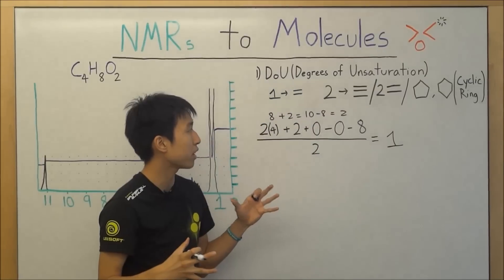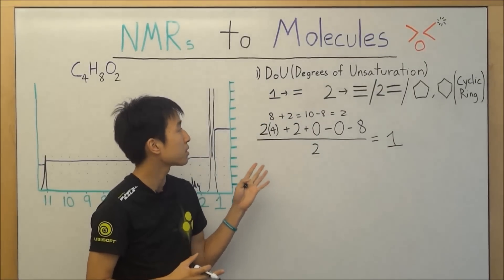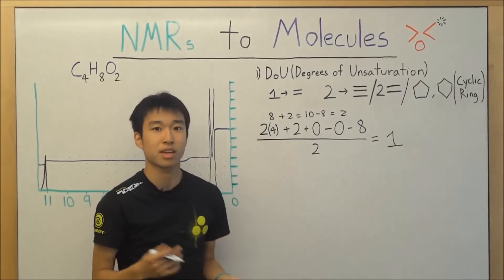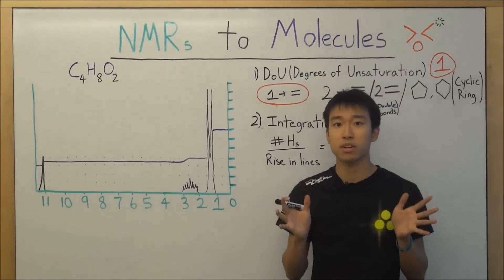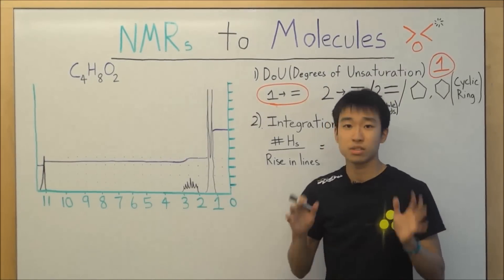The next step now, we found out that there's one degree of unsaturation, so that means that our molecule must have a double bond. Okay? Next step will be integration, so the next part to figure out...